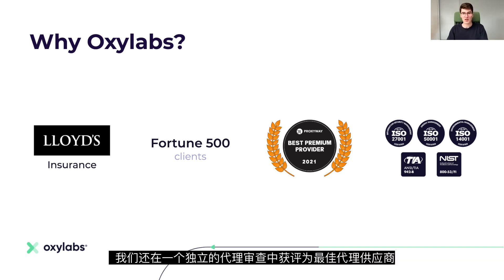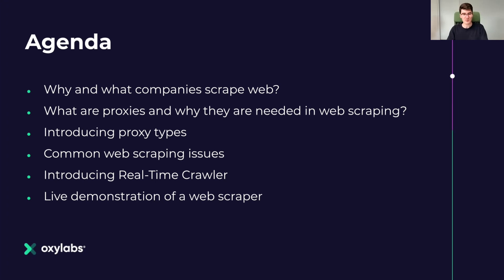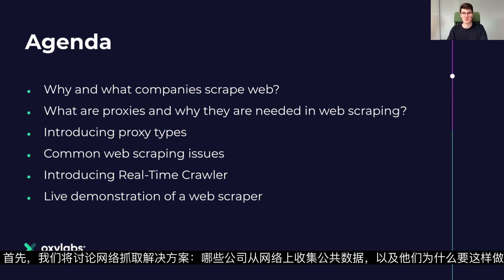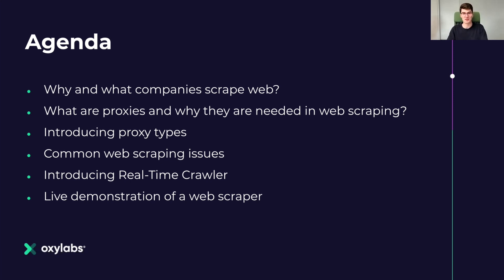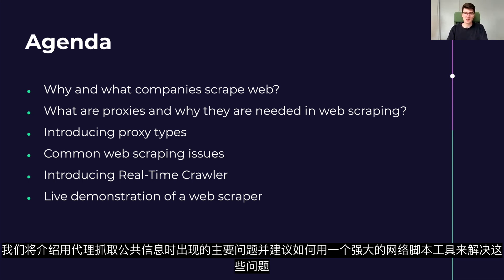We have also been awarded as the best proxy provider by an independent proxy review. So let's go through today's agenda. First, we will talk about web scraping — what companies gather public data from the web and why. We will then introduce proxies, their main types, and their role in the web scraping process. We will cover the main issues that occur while scraping public information with proxies and suggest how to solve these issues with a powerful web scraping tool.